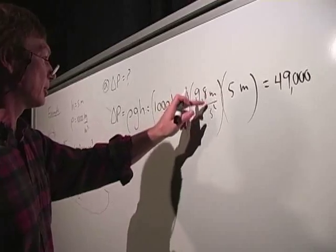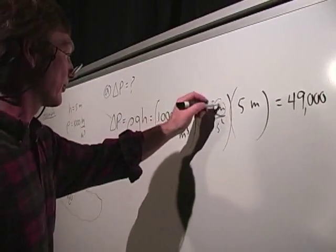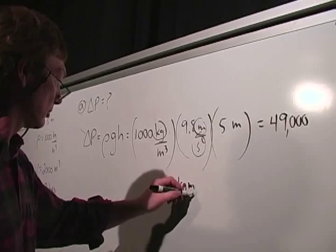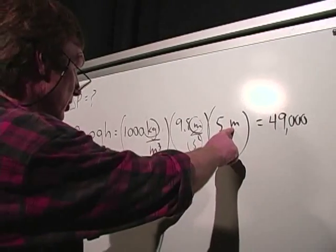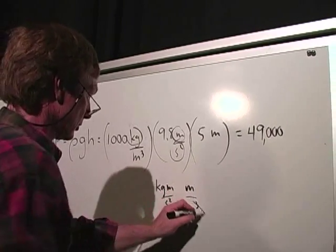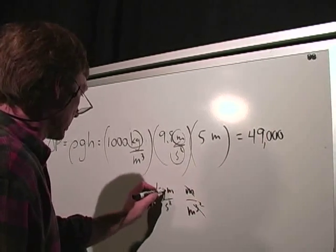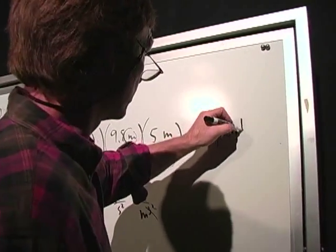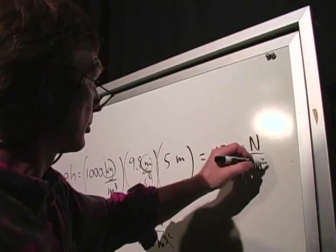Now, let's see. I've got a kilogram meter per second squared. There's a Newton right there. So that's a kilogram meter per second squared times a meter divided by a meter cubed. That's a Newton per meter squared. That's Pascals or Newtons per meter squared.